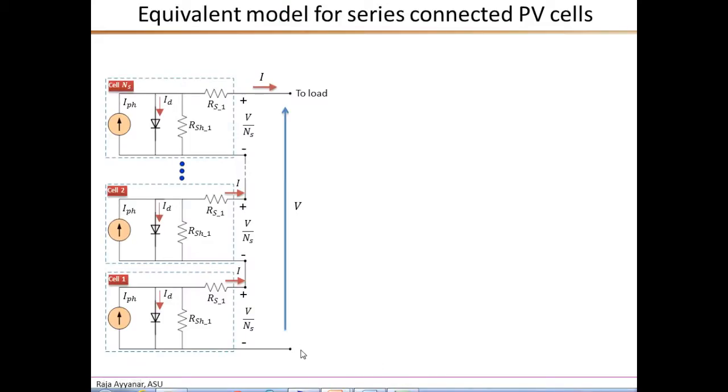For most practical applications, there are multiple PV cells connected in series to form a module. So this is cell 1, cell 2, all the way up to cell NS, where NS is the total number of cells connected in series for that particular module. Now, typical values for NS ranges from about 36 cells to about 72 cells, giving an open circuit voltage in the range of about 20 volts to about 45 volts.